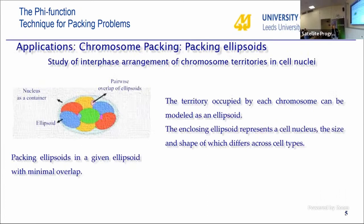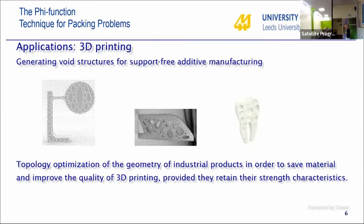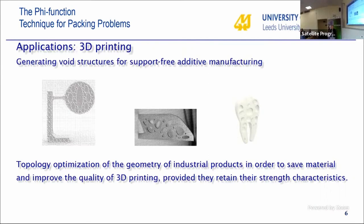In a study on the arrangement of chromosome territories in a cell nucleus, we pack ellipsoids inside a given ellipsoid. The territory occupied by each chromosome is modeled as a spheroid or solid of rotation, and the enclosing ellipsoid represents the cell nucleus. The size and shape differ across cell types.